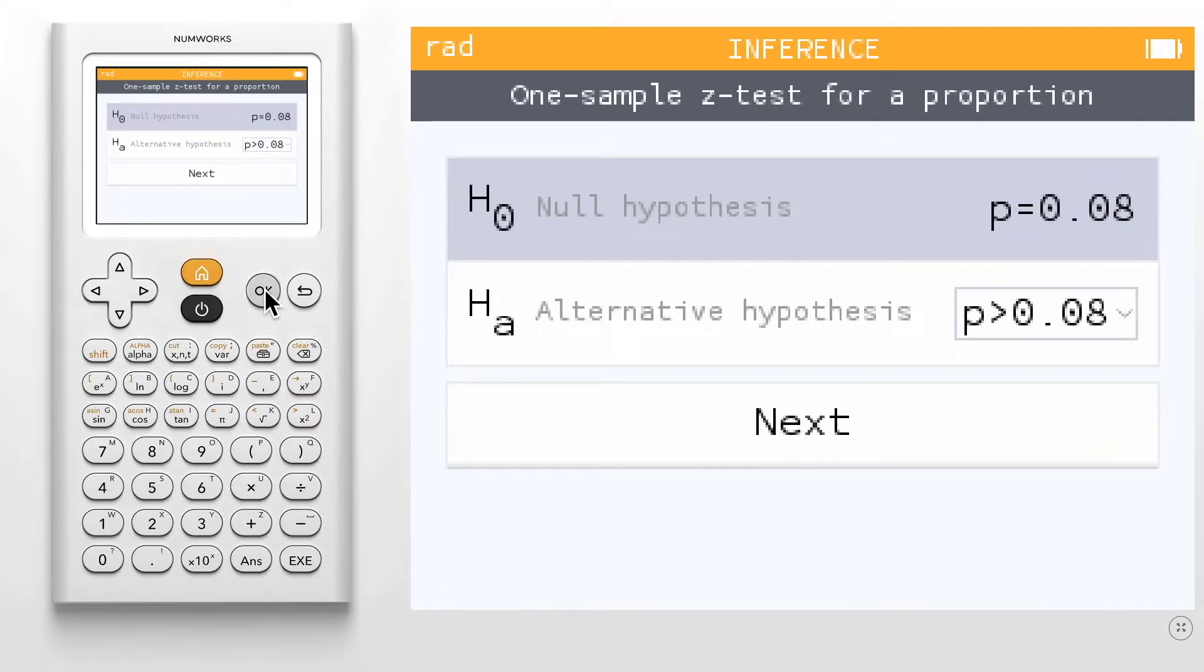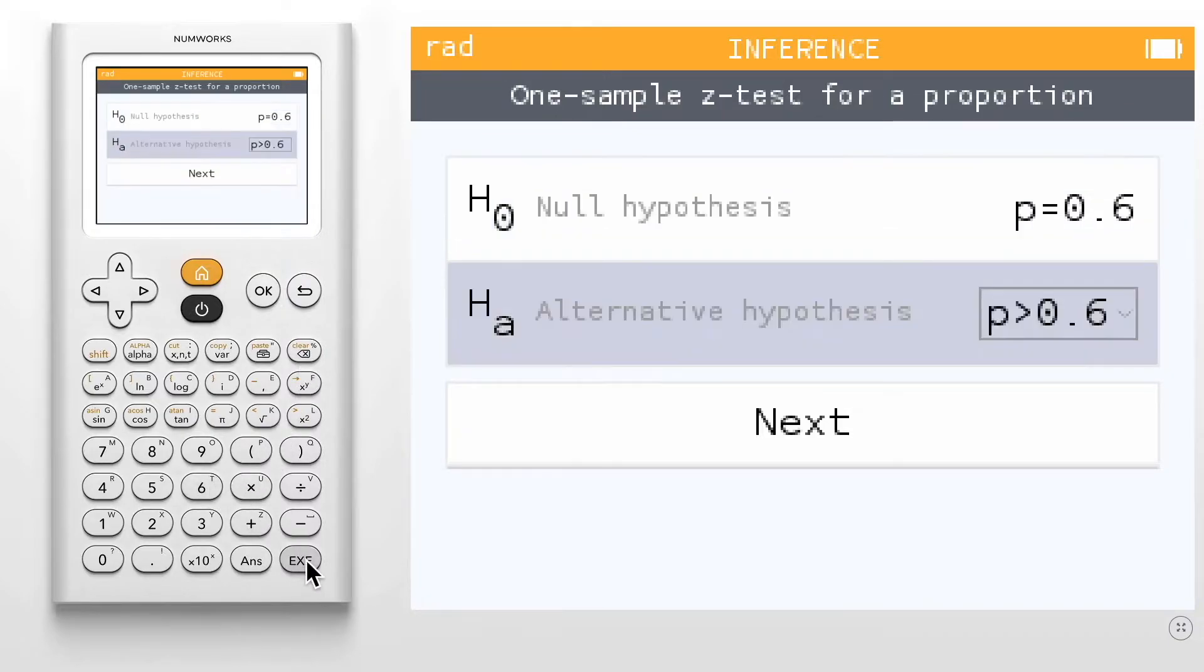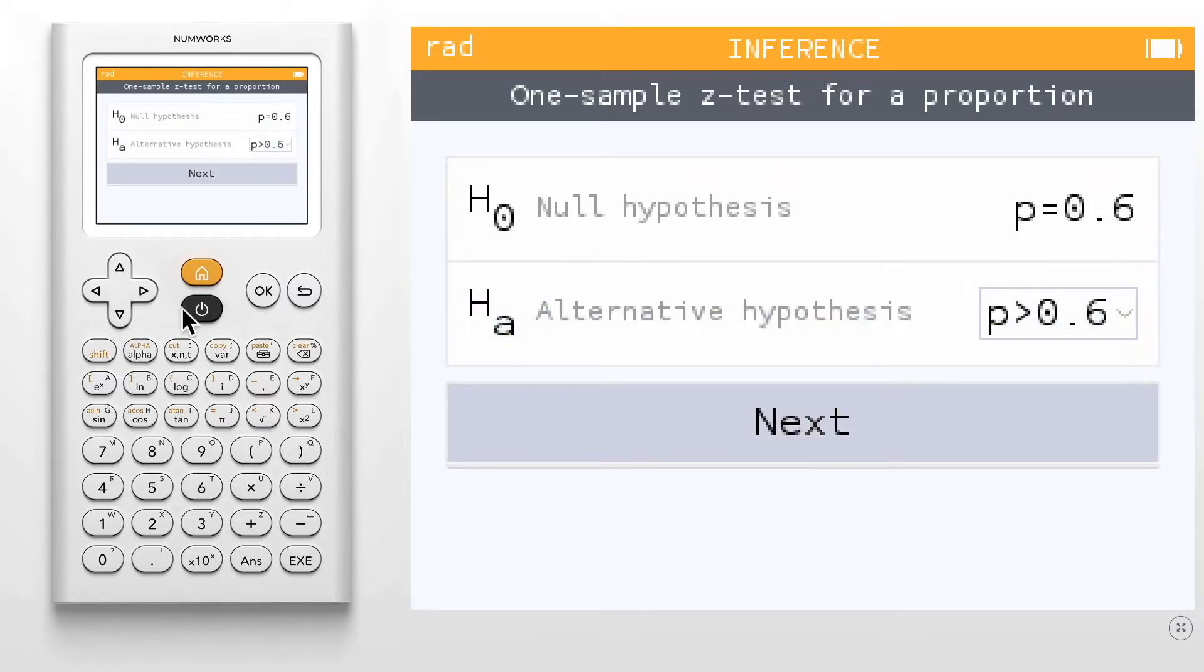The first step of your test is to indicate the null and alternative hypotheses. For this example, we'll use a null hypothesis of p equals 0.6 and an alternative hypothesis of p greater than 0.6. Select Next.